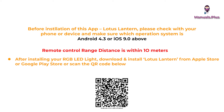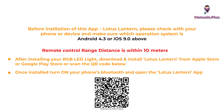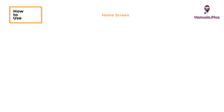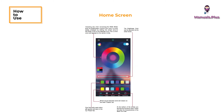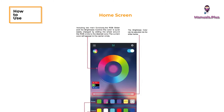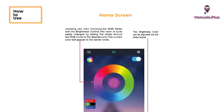After installing your RGB LED light, download and install Lotus Lantern from the Apple App Store or Google Play Store, or scan the QR code. Once installed, turn on your phone's Bluetooth and open the Lotus Lantern app.